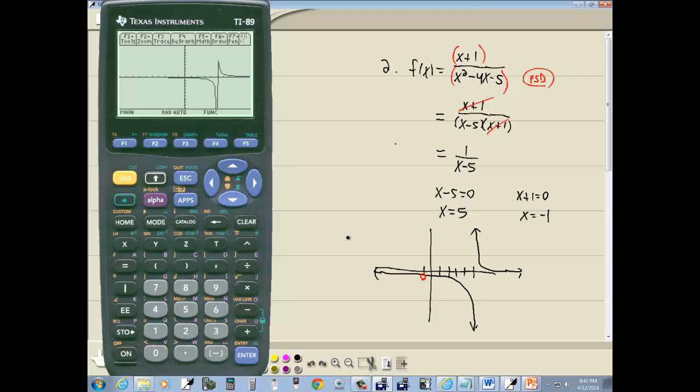Now that's graphing rational functions on a TI-89 calculator. To exit out, you do second escape.